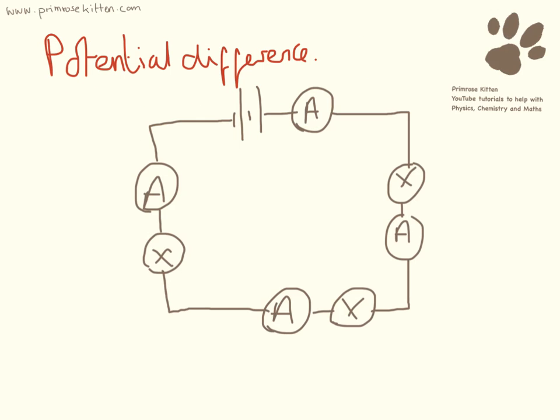Potential difference. That's the bit that we measure with a voltmeter. Now if we measure the potential difference across each one of these lamps and found them to be 1.5 volts each, the potential difference across the battery would be 4.5 volts. Because the potential difference total is equal to the sum of all of the different potential differences across the components. It is the sum.